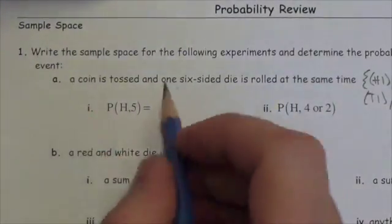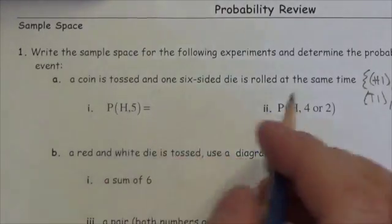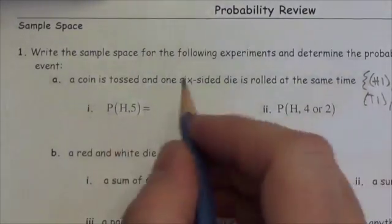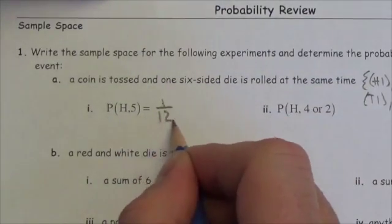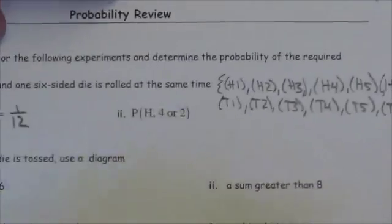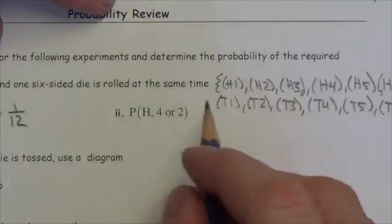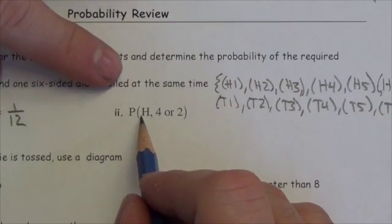So what is the probability of getting heads and a five? Well, there was only one of those events out of a possibility of twelve.